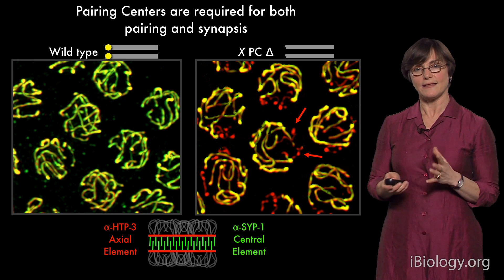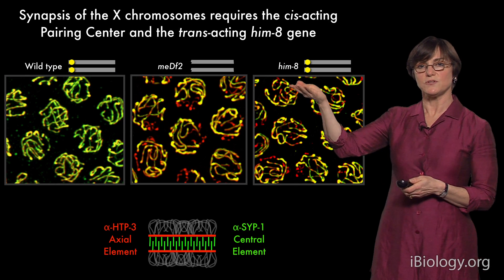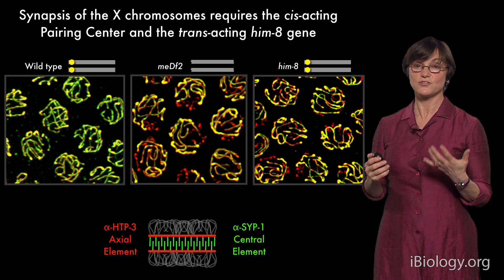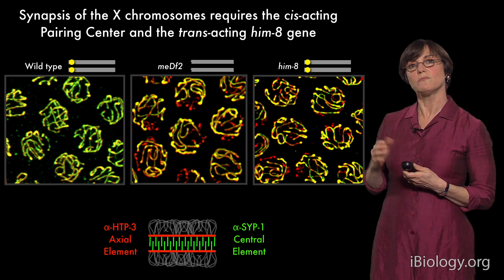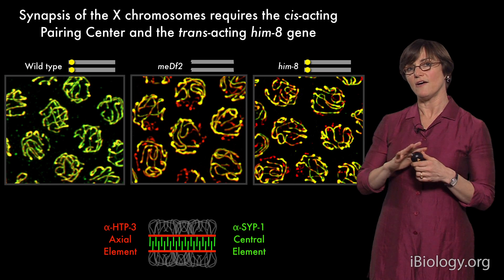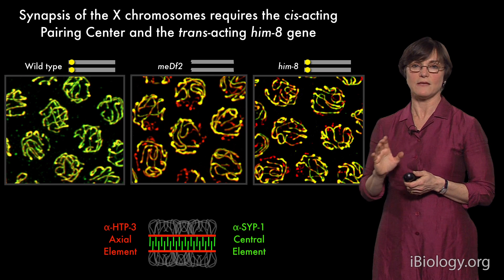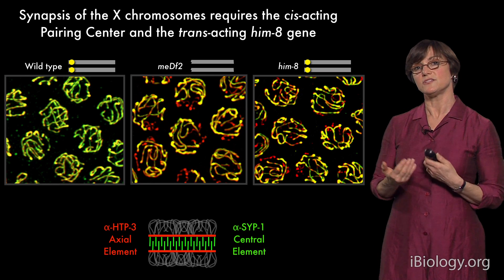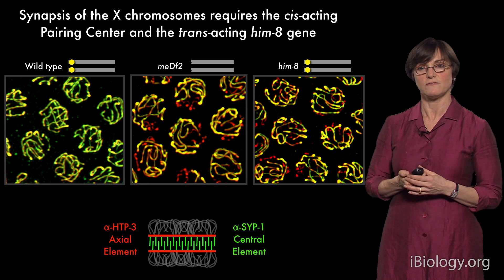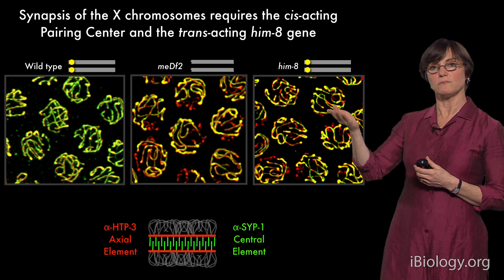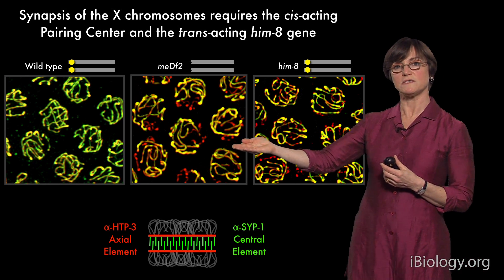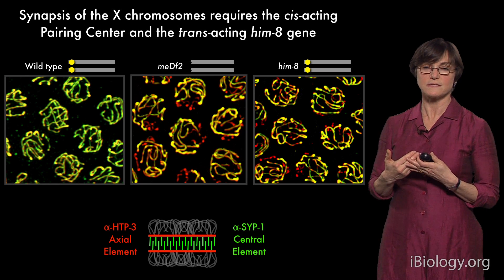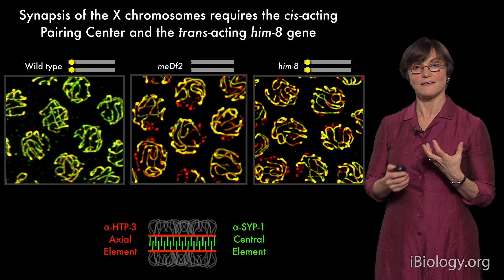Our first major clue came from analysis of a mutation called HIM8. HIM stands for High Incidence of Males, and HIM8 was identified in a screen for mutants that give lots of males. It was unusual because, whereas most mutations affecting meiosis affect all chromosomes, this mutation only seems to affect the X chromosomes, yet the HIM8 gene mapped to a chromosome that was not the X. When we looked cytologically at chromosomes in HIM8 mutants, what we saw was very similar to the absence of the X chromosome pairing centers — the X chromosomes specifically failed to undergo pairing and synapsis. HIM8 seemed like a really interesting molecule to investigate further.